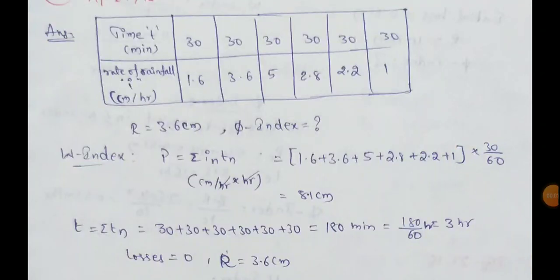Next, in this video, we will discuss the estimation of pi index. First, we will discuss the problem in starting this given data. We have 3 hours time. We have successive 30 minutes. Every 30 minutes, we have the intensity of rainfall.